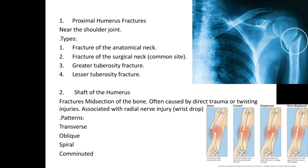Shaft of humerus fractures involve the midsection of the bone, often caused by direct trauma or twisting injuries. They are associated with radial nerve injury and wrist drop. Fracture patterns include transverse, oblique, spiral, and comminuted fractures.